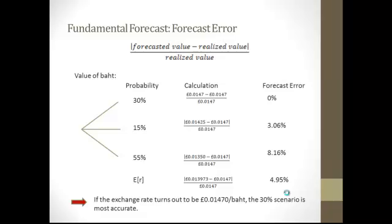Next, we look at the fundamental forecast error and which scenario turns out to be more accurate. In hindsight, we calculate the forecast error by taking the absolute value of the forecasted value subtracted from the realized value, divided by the realized value. The 30% scenario was indeed correct — if the exchange rate turns out to be 0.0147 pounds per baht, as predicted by the 30% scenario, that scenario was accurate. The expected depreciation rate was wrong by about 5%.